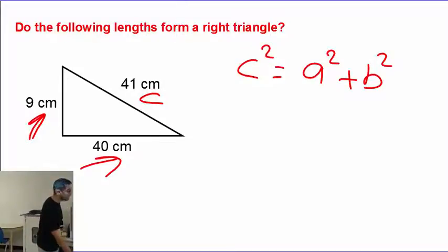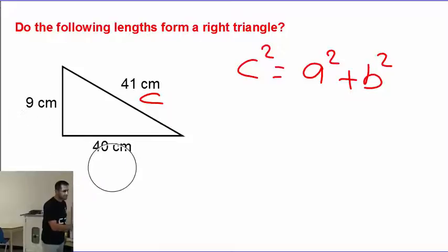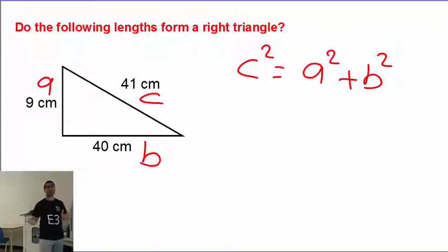And how about a and b? Please never think about which one is a, which one is b. Just pick one. I'm going to call this one a and this one b. You can do the other way around. You wouldn't make a mistake anyway.